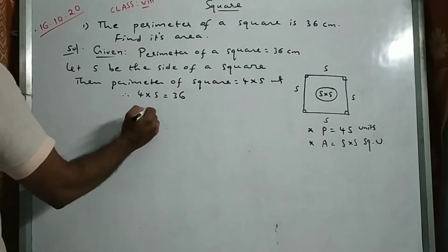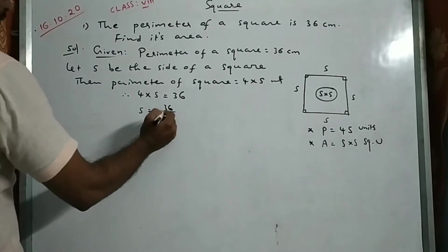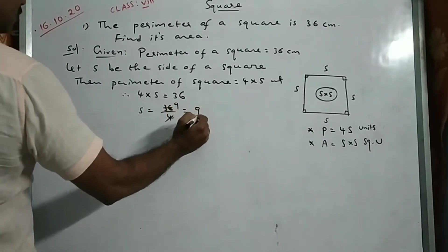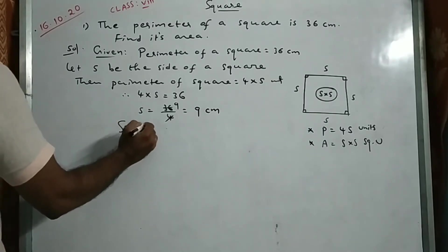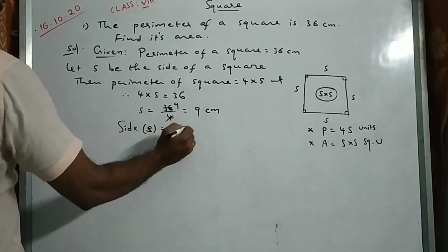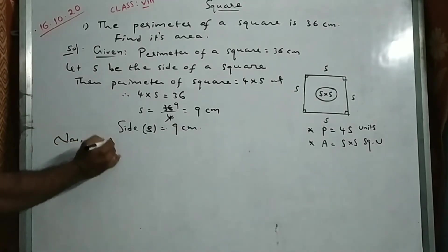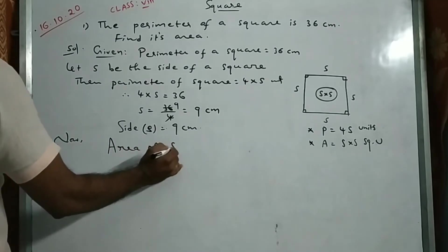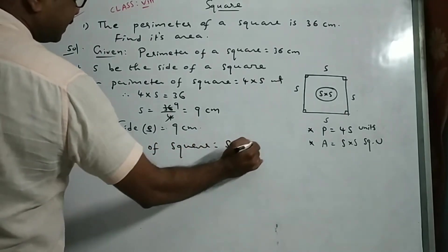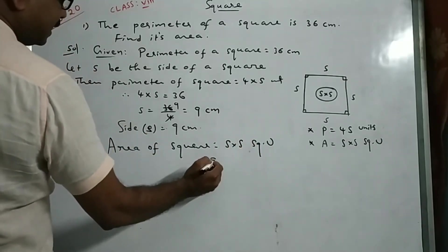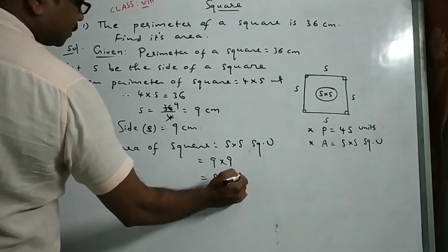So 4 into side equals 36, which means side equals 36 divided by 4. That gives us side S equal to 9 cm. Now, area of square equals side into side — that is 9 into 9 — which equals 81 square centimeters.